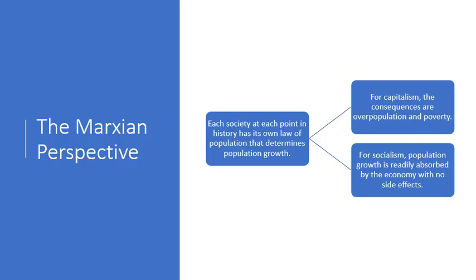For the Marxian perspective, beginning with Karl Marx and Friedrich Engels, the question of population was not one of concern. They were more concerned with the structure and form of the economy, and that of course was their critique of capitalism. They felt that the overpopulation and poverty that Malthus observed was a result of capitalism, not overpopulation. They argued that if there was a shift to a socialist form of economy, overpopulation would be accommodated because even the poorest would receive basic needs.